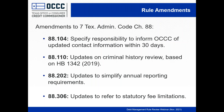In Section 88.104, we add language explaining that registrants must provide certain updated contact information, such as the business name or names of principal parties, within 30 days after any change occurs. This change works together with the change to Section 88.202, where we'd remove the requirement to provide a list of principal parties to the OCCC every year upon renewal. We're hoping this will simplify the process for registrants to notify the OCCC of changes.